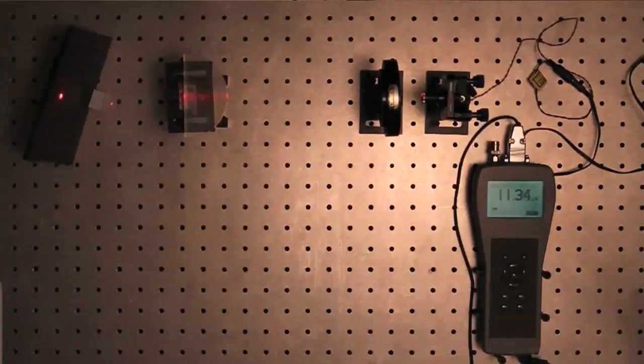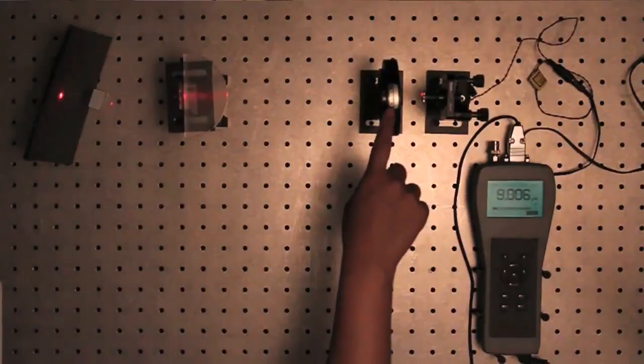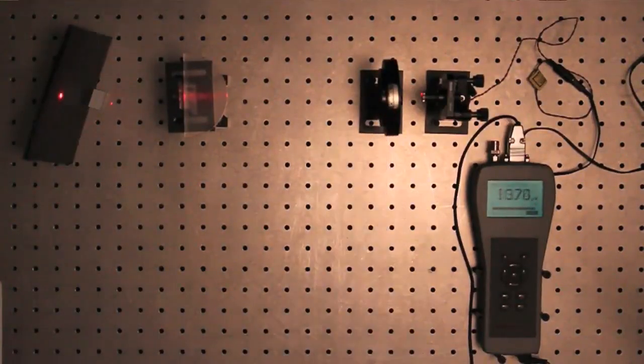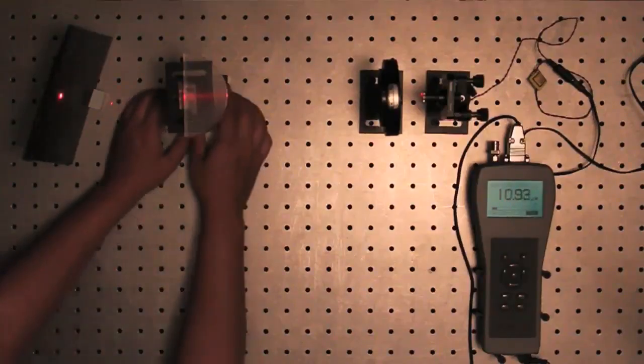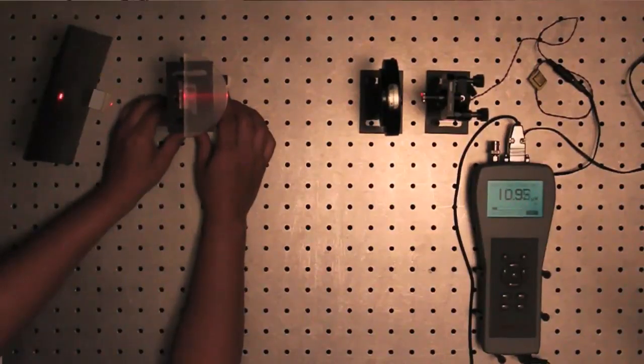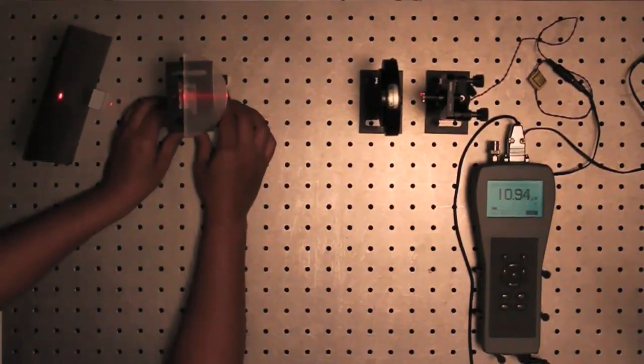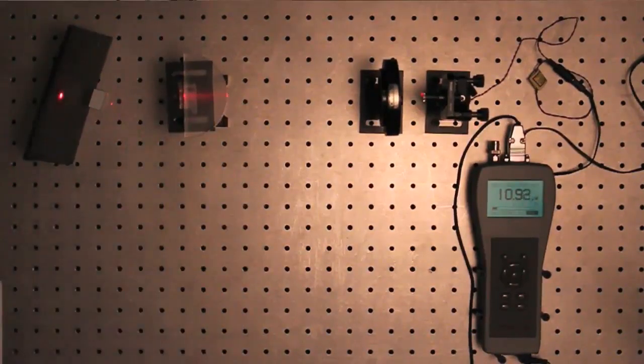Set the polarizer to pass the TM polarization. Align the back reflected beam toward the incoming direction. This will calibrate zero degrees or normal incidence. Now measure the incident power.